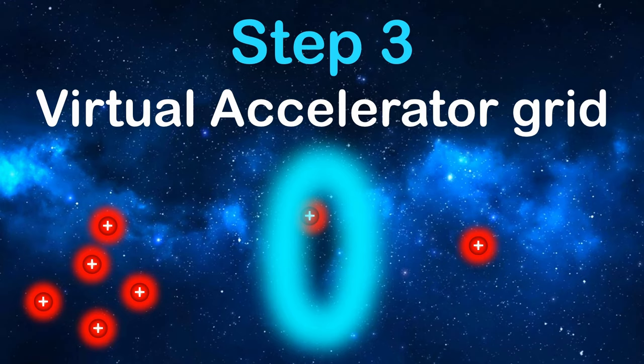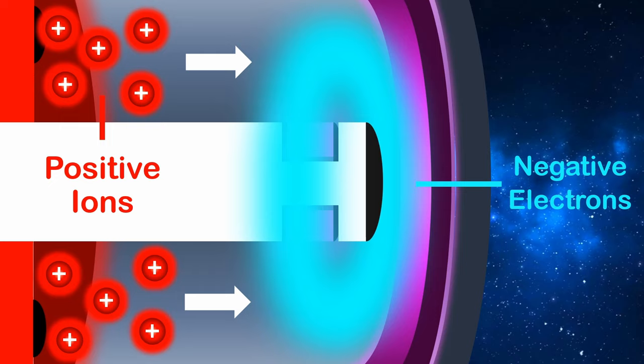Because opposite charges attract, the positive ions are strongly pulled toward the negative electron tornado. They're then fired out of the thruster at up to 25 times faster than a bullet.